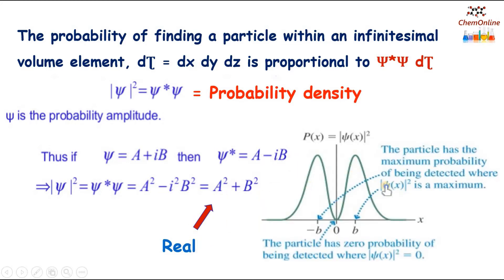This is a graphical representation of the probability density. The peak positions represent the maximum value of ψ²; that is, the particle has the maximum probability where the value of ψ² is maximum. Whereas at the center position the particle has zero probability, because the value of ψ² is zero.